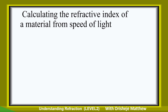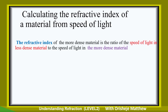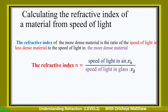Now let's look at calculating the refractive index of a material from the speed of light. The refractive index of the more dense material is the ratio of the speed of light in the less dense material to the speed of light in the more dense material. So the formula is: refractive index equals speed of light in air divided by speed of light in glass.